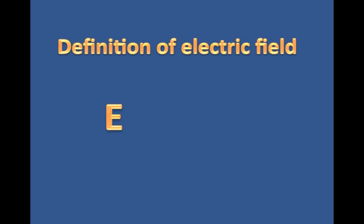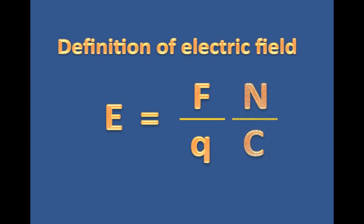Now the definition of the electric field: the formula is E equals F divided by the test charge Q — the force at that point on that charge divided by the little charge Q. And the unit is newtons per coulomb. There isn't any other unit for the electric field.